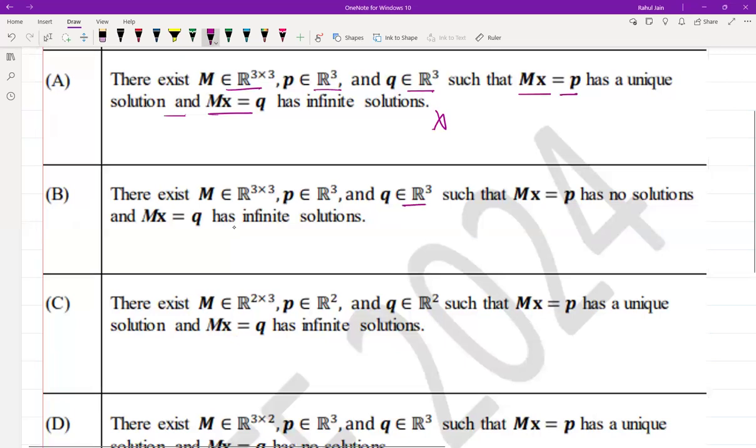Option B: There exists M ∈ ℝ^(3×3), p ∈ ℝ³, and q ∈ ℝ³ such that Mx = p has no solution and Mx = q has infinite solutions. This is true.